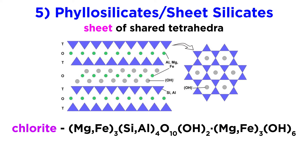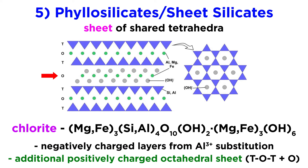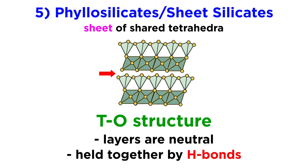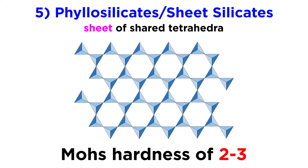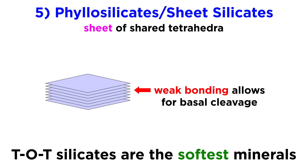The chlorite minerals have a similar structure with negatively charged layers due to aluminum substitution. However, instead of being glued together by cations, they have an additional positively charged octahedral sheet between layers — a structure called T-O-T plus O. The last group has a T-O structure, and like talc, the layers are neutral, but held together by stronger hydrogen bonds. Most sheet silicates have a similar hardness between about 2 and 3, except for the T-O-T group, which are the softest. The weak bonding between layers gives all sheet silicates perfect basal cleavage, causing them to peel apart like the plies in a roll of toilet paper.